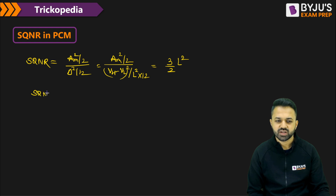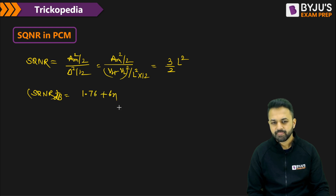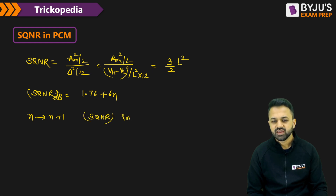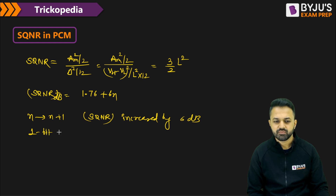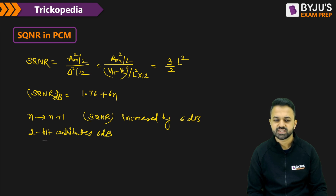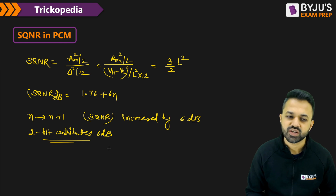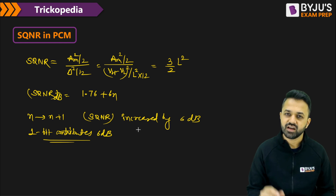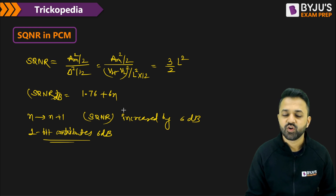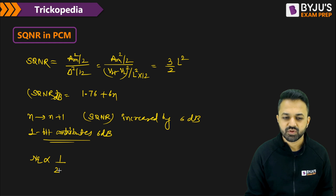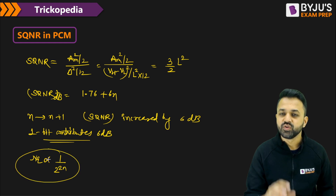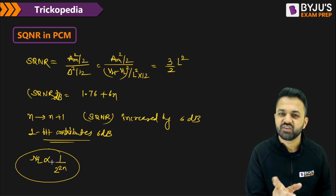The signal to quantization noise ratio in dB is 1.76 plus 6n. If you increase the number of bits by 1, the SQNR increases by 6 dB — meaning one bit contributes 6 dB to the SQNR. If you want to reduce the quantization noise power, it is inversely proportional to 2 to the power 2n, so increasing bits by 1 reduces quantization noise power by a factor of 4.